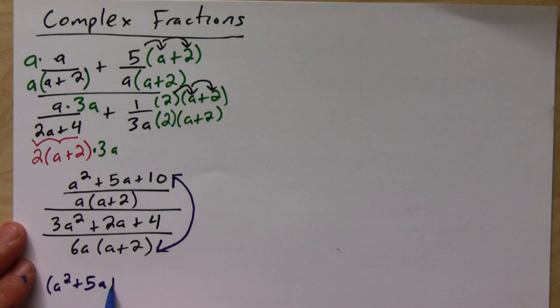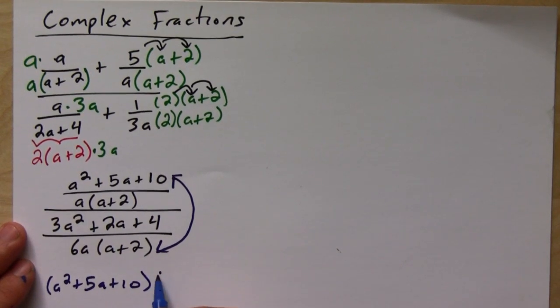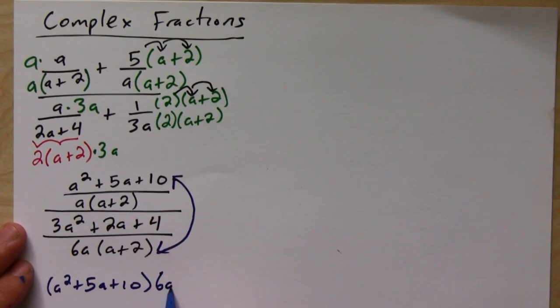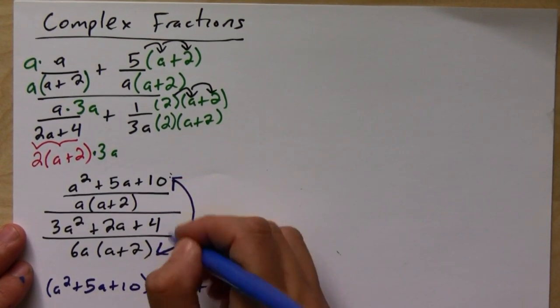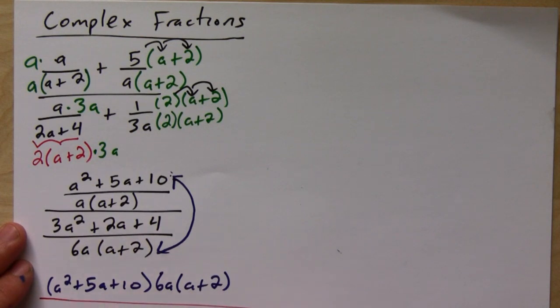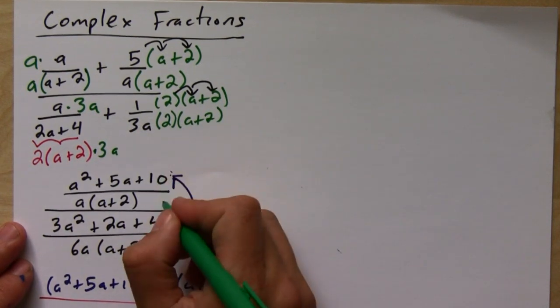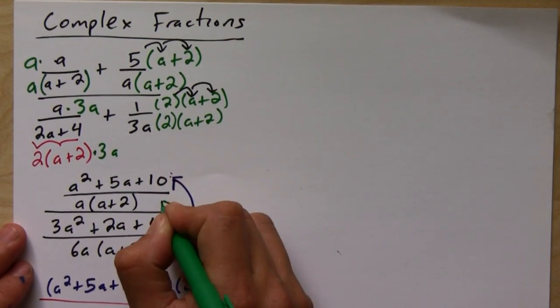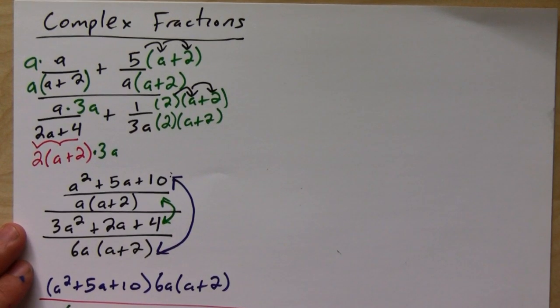And you get (a squared plus 5a plus 10) times 6a(a plus 2). So the very top and very bottom multiply, they end up on top, then you multiply the inside guys and those end up on bottom.